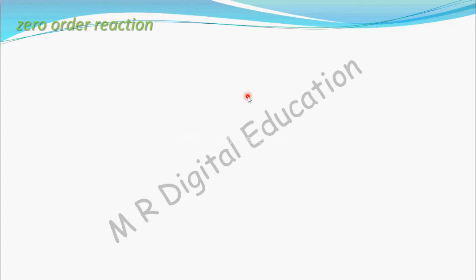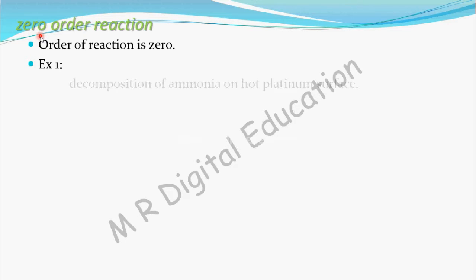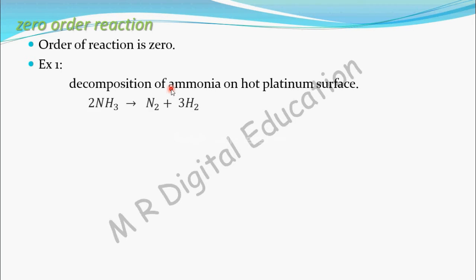Let's see more about zero-order reactions. For a zero-order reaction, the order of reaction is zero. An example is the decomposition of ammonia on a hot platinum surface: 2NH3 gives N2 plus 3H2. The rate equation for this reaction can be written as rate equal to K multiplied by the concentration of NH3 to the power zero.